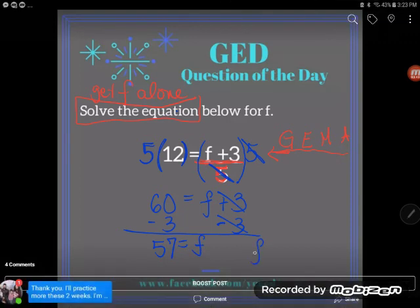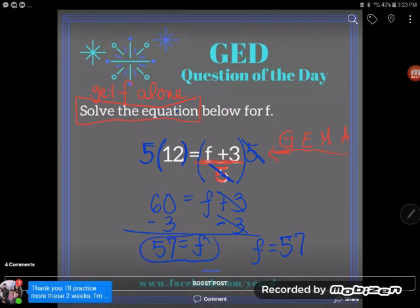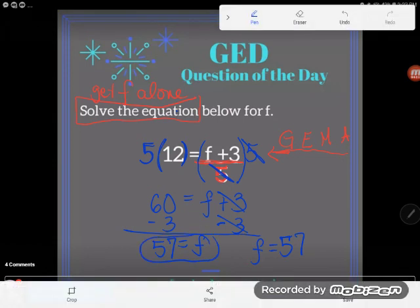Now some of you guys really like to write the letter on the left-hand side so you can say f is equal to 57. But these two things mean exactly the same thing so don't worry. They're both correct answers. So that's my final answer. I'll leave it that way. 57 is f. f is 57. Same deal.